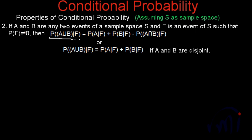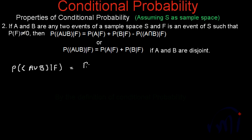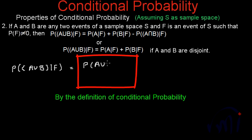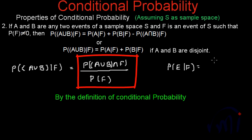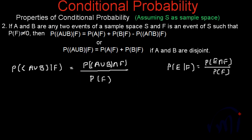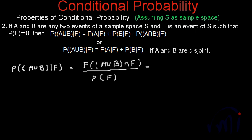Taking the left hand side, P(A∪B|F) is equal to P((A∪B)∩F) divided by P(F). Recall that the probability of event E given F is equal to P(E∩F) divided by P(F). This can also be written as the number of elements in (A∪B)∩F divided by the number of elements in F.